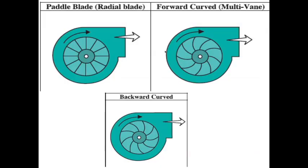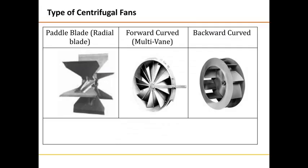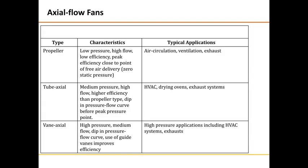This is the representation of radial blade, forward curved and backward curved. Radial blades are very straight blades. If the curves of the blades are forward, it is named forward curved; if the curves are in the backward direction, it is named backward curved. Here are the schematic and actual pictures of radial, forward curved and backward curved blades.